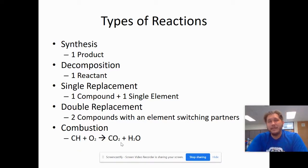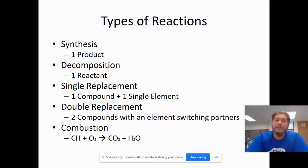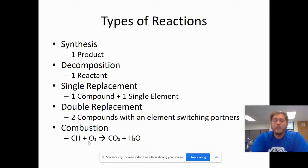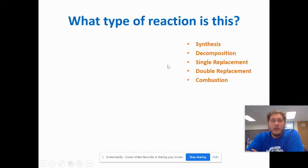Combustion always has the form of CH — a hydrocarbon — plus O2 yielding CO2 and H2O. It always has that form, even though the C and H can have other subscripts. The key is to look at the product side and see CO2 plus H2O, then go back and check that the reactants are O2 with a hydrocarbon.